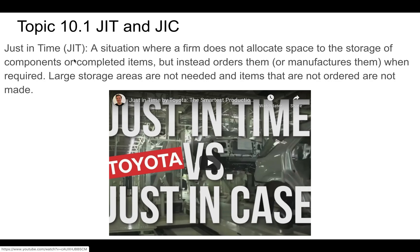Just-in-time production is where a company or manufacturer makes something to order. What they're not doing is storing components or completed products until they're needed. They will acquire materials, raw materials, or components when they need them and not before that, so they don't need large storage areas.